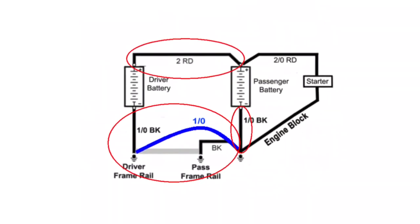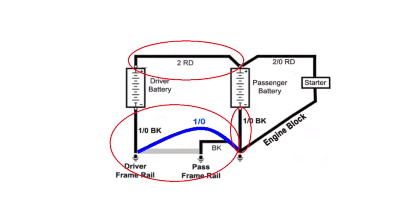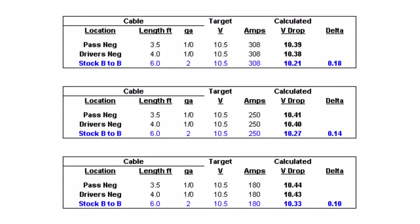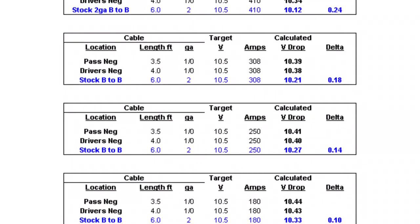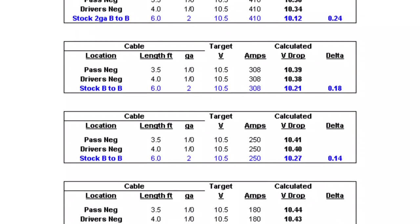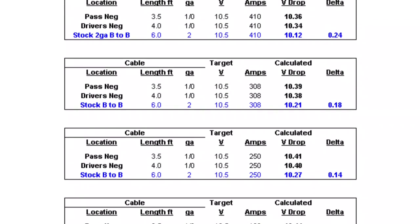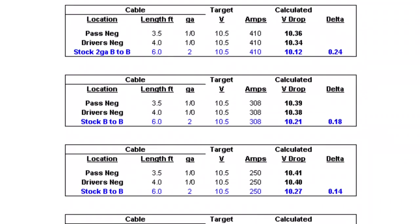These are the three cables I need to evaluate. By entering the length, target voltage of 10.5, and current flow into the calculator, we can see the voltage drops. And the worst case voltage drop between the two-gauge cable and the one-aught negative cables is shown on the right as delta. I've used the current values that I measured, peak and sustained, at warm and cold temperatures. And as the current demand goes higher, so does the voltage drop, as you would expect.